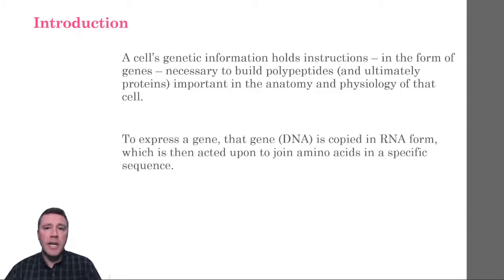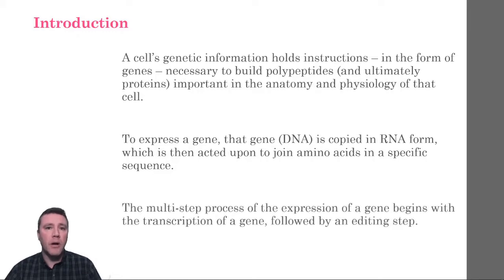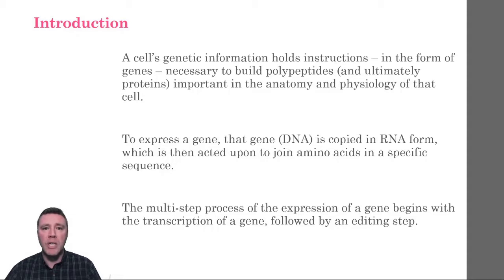To express a gene using protein synthesis, a cell's DNA is acted upon to produce RNA, which is then used to assemble amino acids in a specific sequence. This sequence of amino acids — a polypeptide — is a protein's primary structure. Once secondary and tertiary structure, and possibly quaternary, are achieved, a functional three-dimensional protein is yielded.